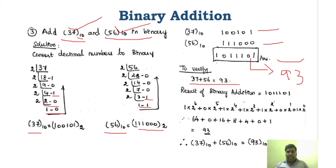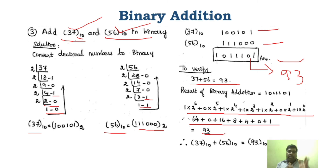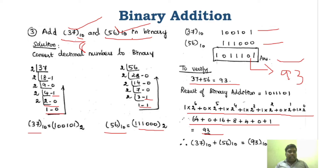37 plus 56 is 93. If you want to verify, convert the binary result back to decimal — you should get 93. We expand the binary answer using powers of 2 from position 0 to 6, substitute the values, and we will get 93. So for decimal values, first convert to binary, then add. This applies not only to decimal — even if it is an octal number or hexadecimal, convert to binary first and then add. This is the binary addition rule.